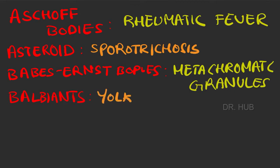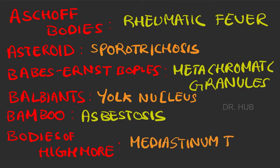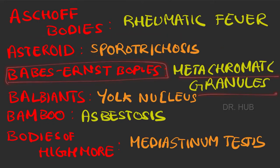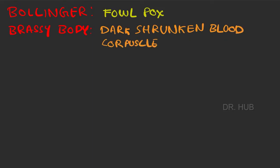Balbiani bodies seen in yolk nucleus, bamboo bodies seen in asbestosis, and bodies of Highmore in mediastinum testis. Next we have Bollinger bodies seen in fowlpox.